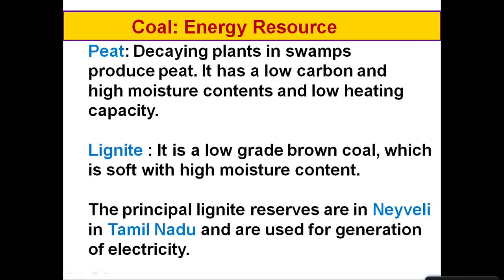The varieties of coal include: peat, formed by the decaying of plants in swamps — one of the lower grades; lignite, a soft, high-moisture-content, low-grade brown coal. The Neyveli lignite deposit in Tamil Nadu is a major source of electricity generation in our country.